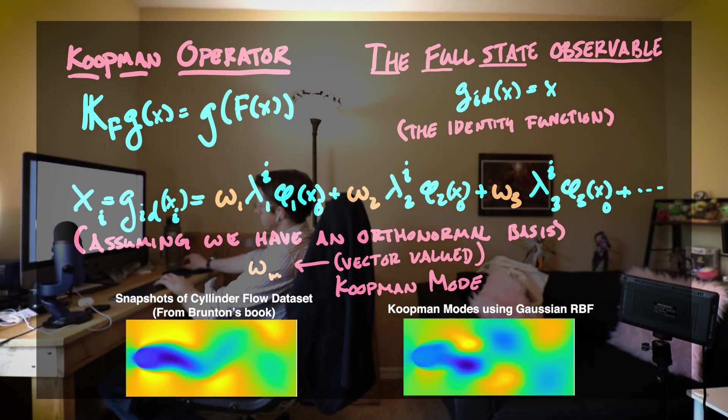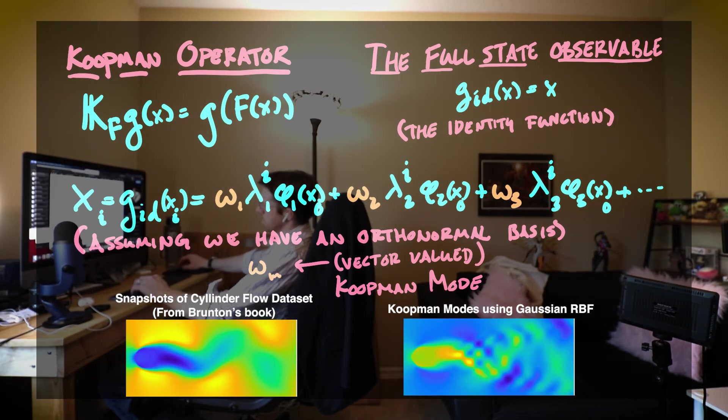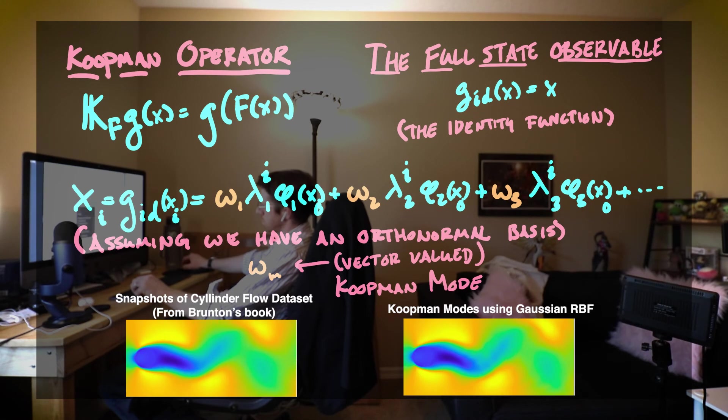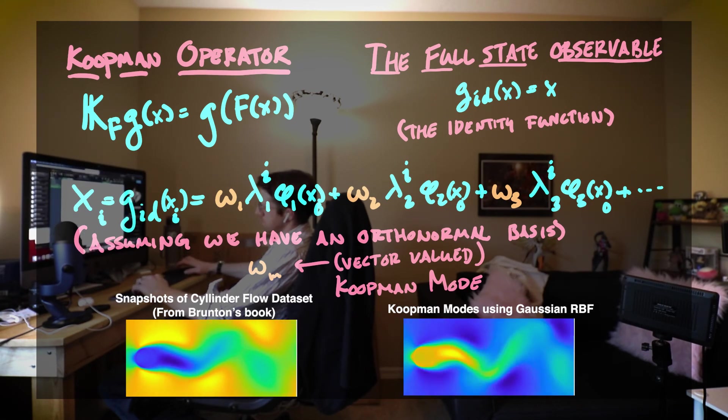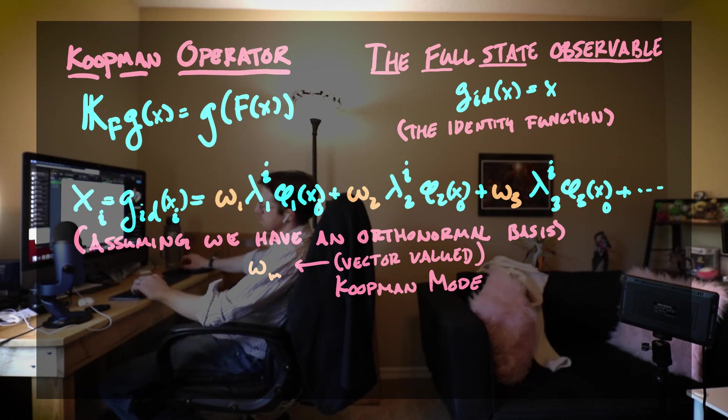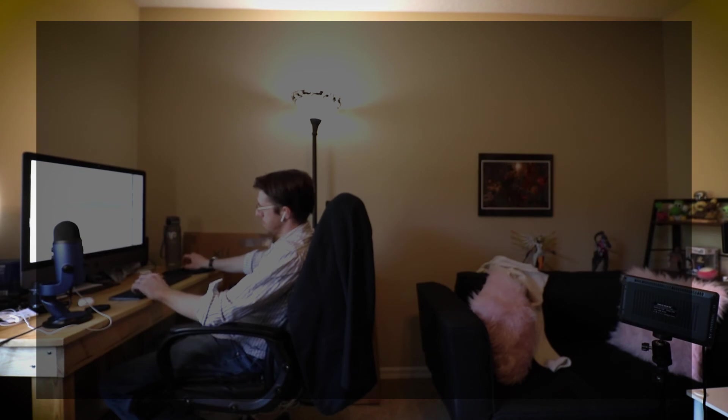Now again, our dynamics are unknown. We don't have access to the Koopman operator itself. And so the DMD tries to get an approximation of this operator through finite rank representations, and it uses the snapshots of our system and it constructs a matrix that can be decomposed and leads to approximate eigenfunctions inside of our space.